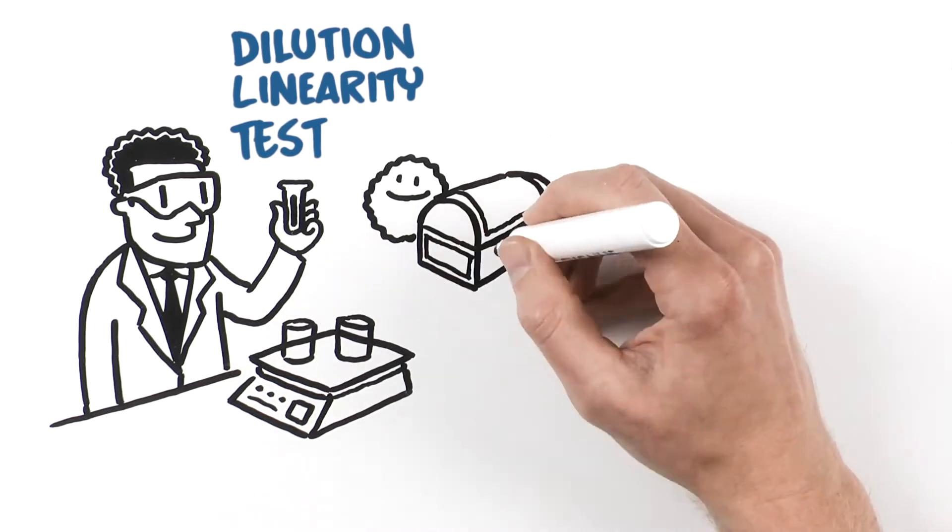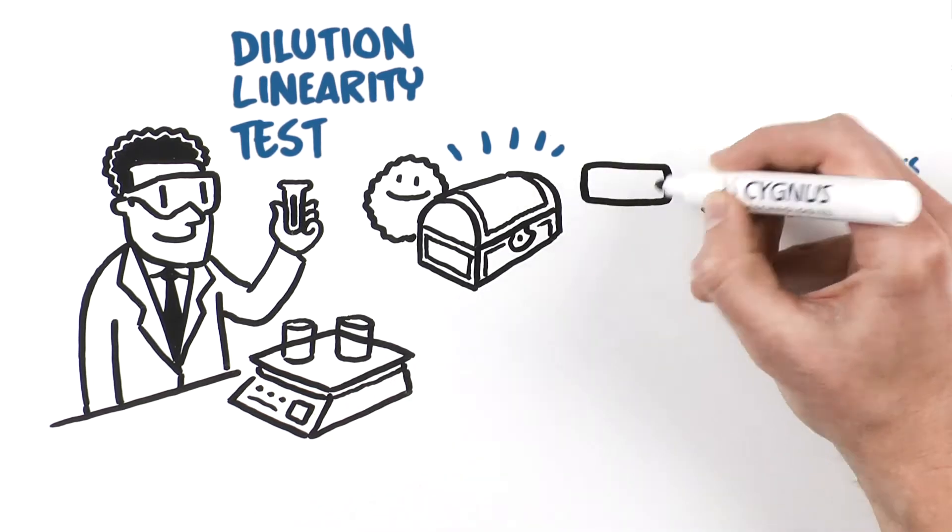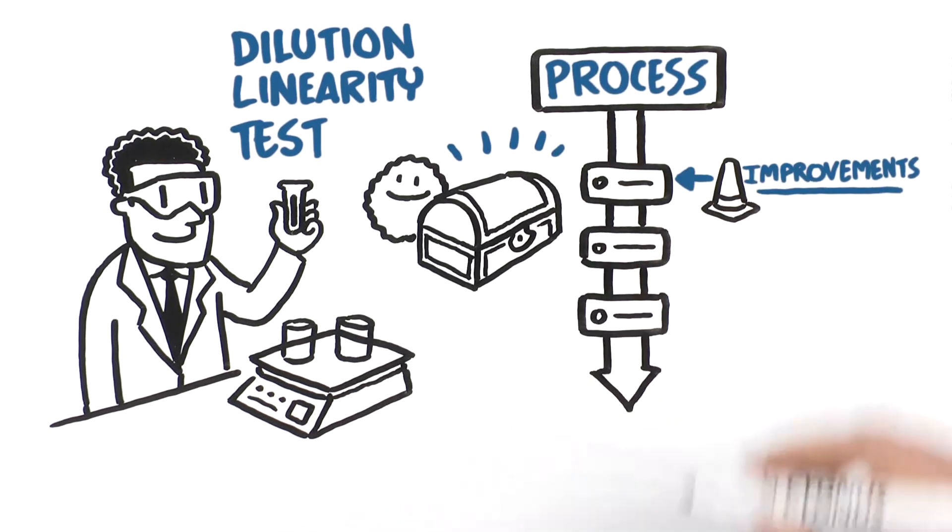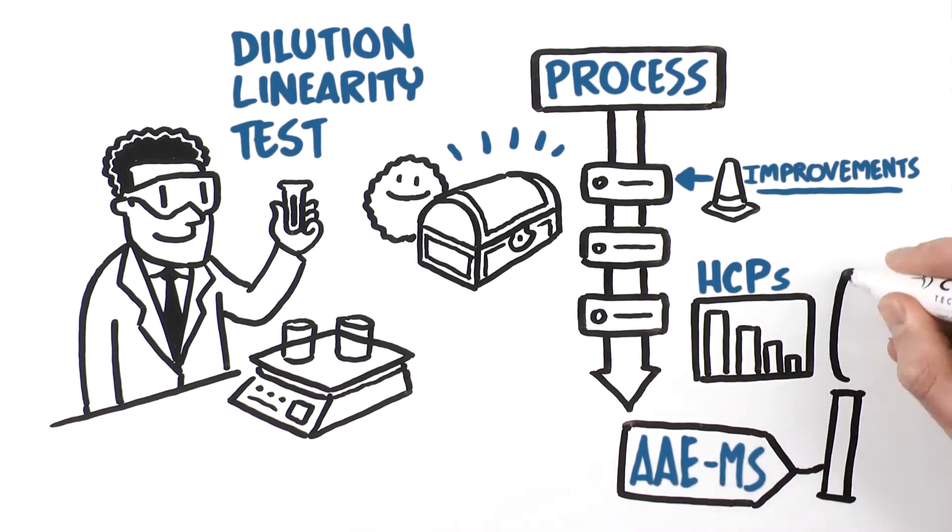Poor dilution linearity doesn't mean a new assay is needed, but rather improvements to the downstream process may be needed to reduce those HCPs. Use 2DE-MS to identify those HCPs. If the dilution linearity is good, perform spike recovery, precision, and sensitivity studies to complete assay qualification.